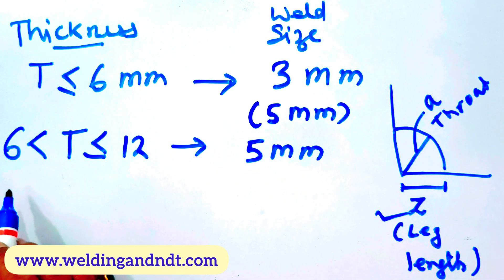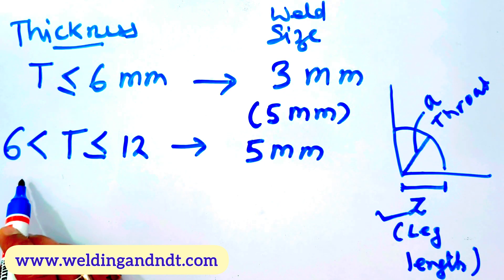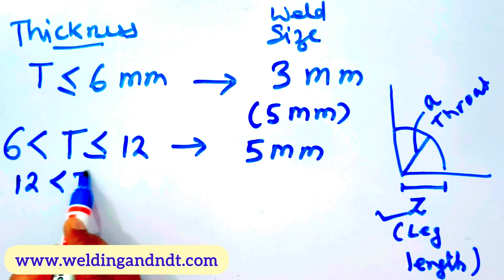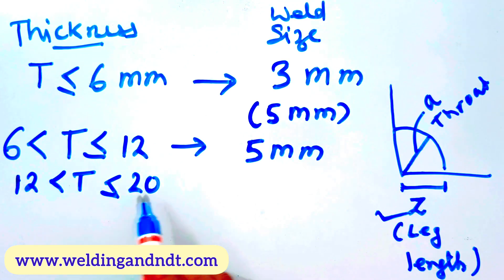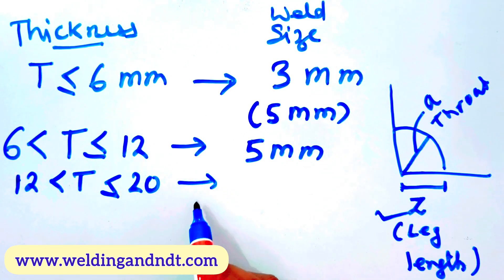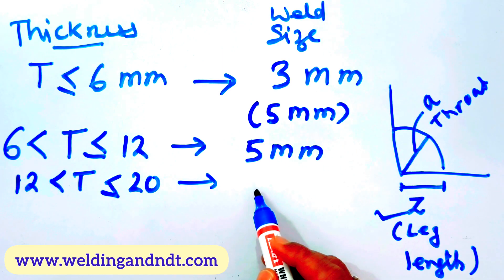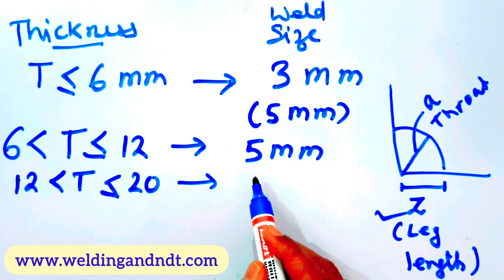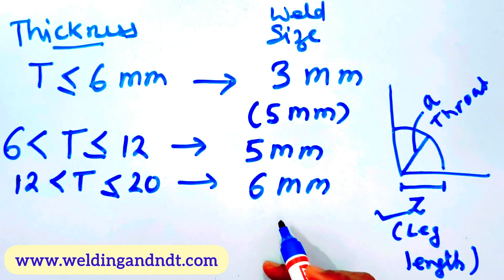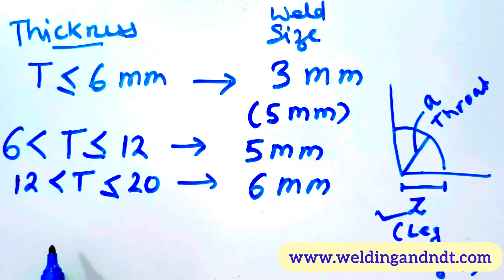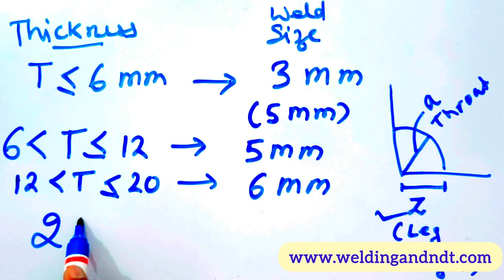The third condition: if the thickness is more than 12 mm but less than or equal to 20 mm, then the minimum fillet weld size will be 6 mm.